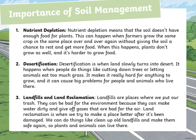Moving to the continuation of the importance of soil management, we have nutrient depletion. Nutrient depletion means that the soil doesn't have enough food for plants. This can happen when farmers grow the same crop in the same place over and over again, without giving the soil a chance to rest and get more food. When this happens, plants don't grow as well, and it's harder to grow food.